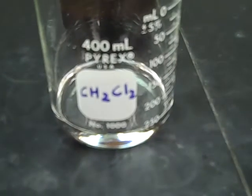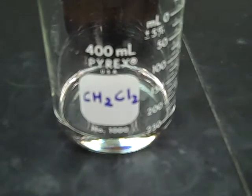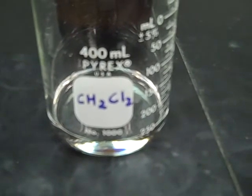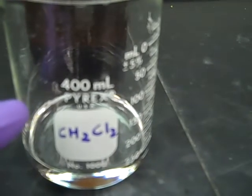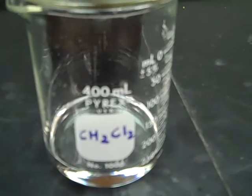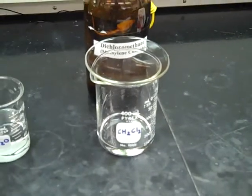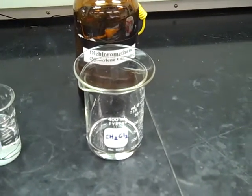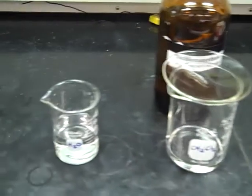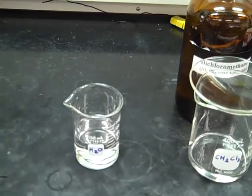So here we've got an organic layer that has dichloromethane, CH2Cl2, and then we have an aqueous layer, H2O. So in our organic layer is an organic product. But there also may be some aqueous byproducts or other materials that we could extract away from that organic layer into the aqueous water layer.